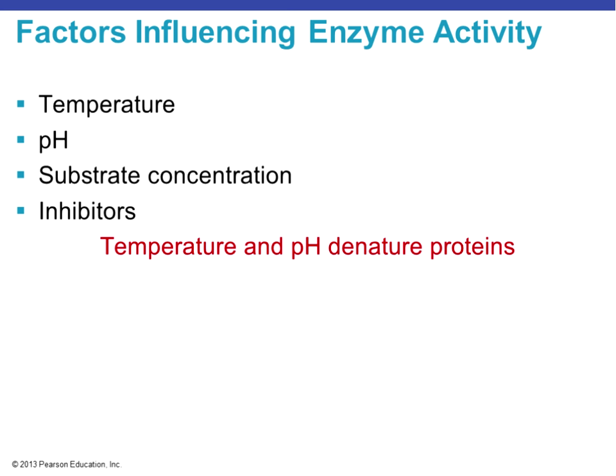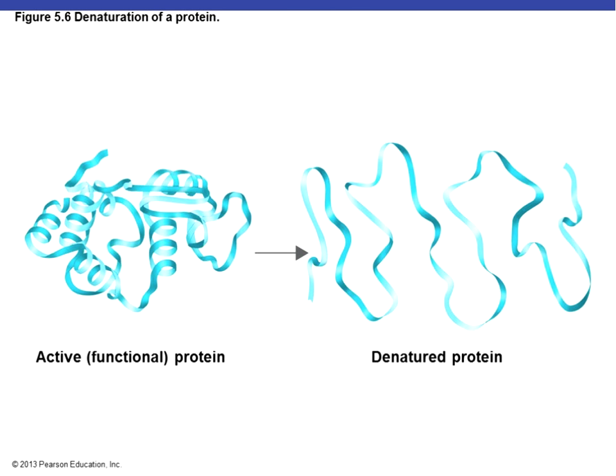There are things that can influence enzymatic activity — how an enzyme works and how well it works. Those are temperature, pH, substrate concentration, and inhibitors. For temperature and pH: if the temperature isn't right, or the pH is too acidic or too basic for the enzyme, it will cause the enzyme to denature. Denaturation means the enzyme loses its shape, and if it loses its shape it also loses its function because the active site will no longer be available for the substrate to bind.